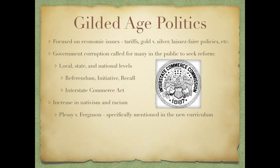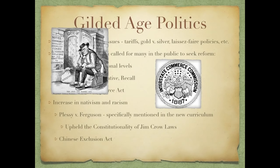We see an increase in nativism and racism through things like Plessy v. Ferguson, in which the Supreme Court upheld Jim Crow laws and said separate facilities are okay as long as they are equal — that is specifically mentioned in the new curriculum. The Chinese Exclusion Act is another example of nativism, banning Chinese immigration in 1882, and also the APA, or the American Protective Association.